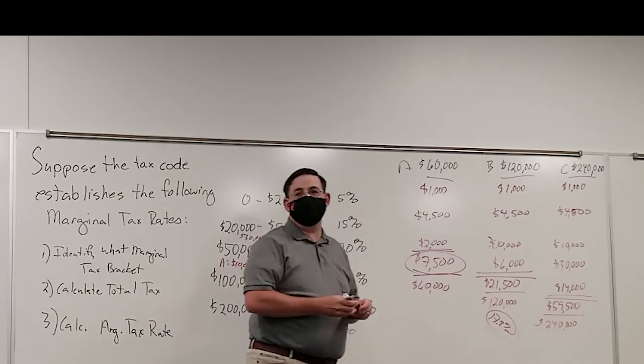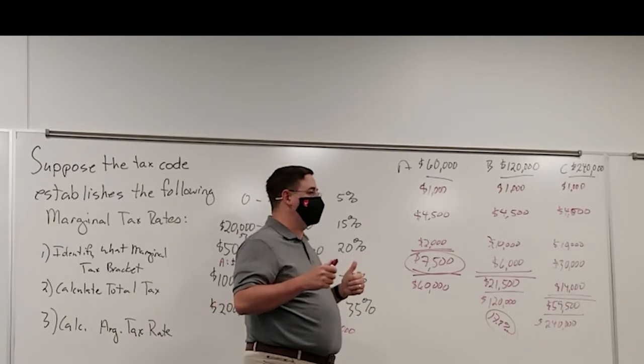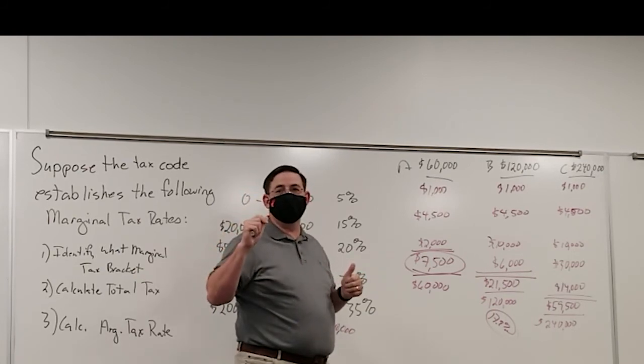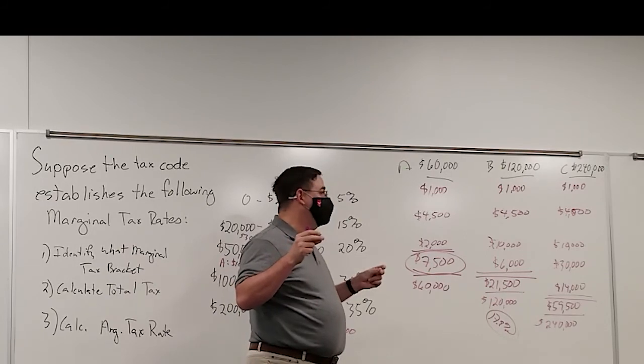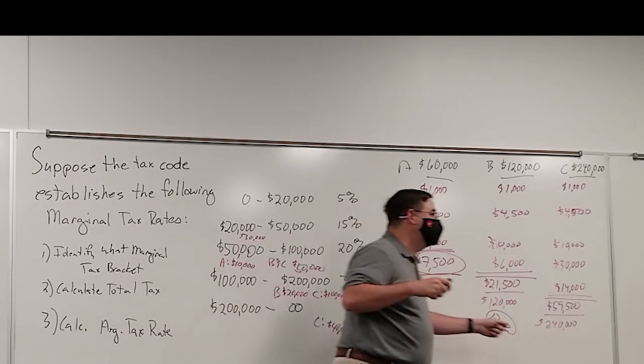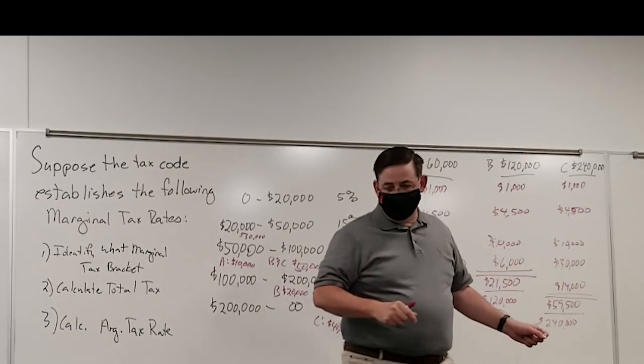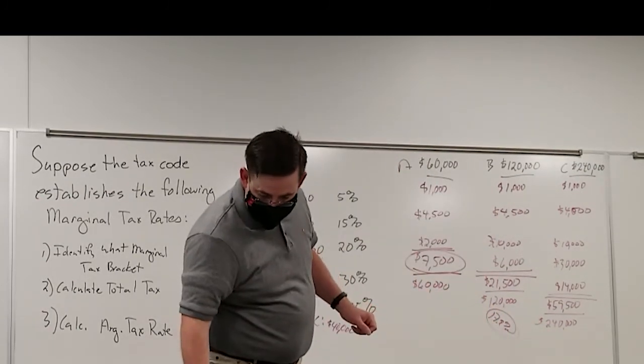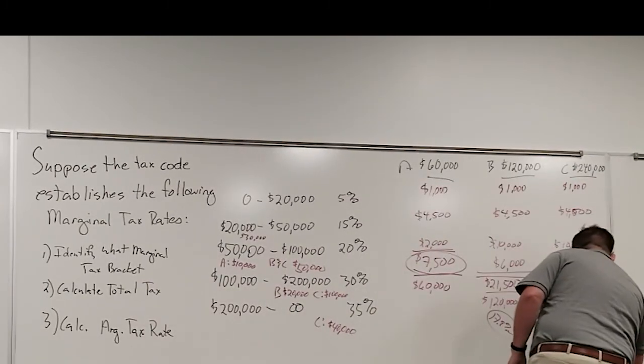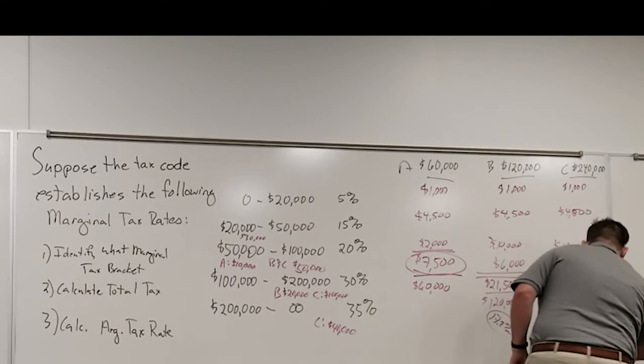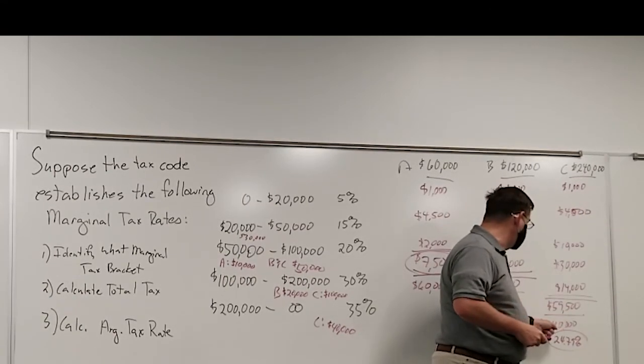Anybody have family C? What do you get? Come on, you've got to be engaged. You've got to be involved. What did you get? 24.79 should be right. So you should be dividing 59,500 by 240,000. And who has family A? I get 12.5.